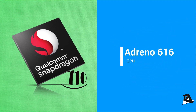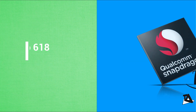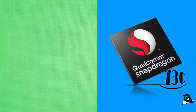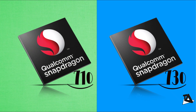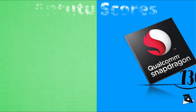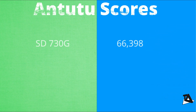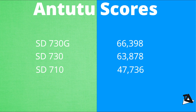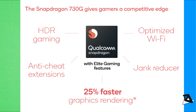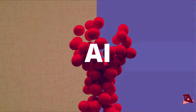Comparing GPU performance: Snapdragon 710 has Adreno 616 and Snapdragon 730 has Adreno 618. Looking at AnTuTu GPU scores, Snapdragon 730G scores 660,398, Snapdragon 730 scores 630,878, and Snapdragon 710 scores 477,360. Basically, graphics performance for the Adreno 618 on Snapdragon 730G and 730 is about 25% faster compared to the Adreno 616 on Snapdragon 710.